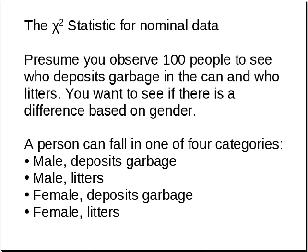Here's a brief explanation of the chi-squared statistic for nominal data. This is categorical data, or nominal data, because a person can fall into one of four categories.